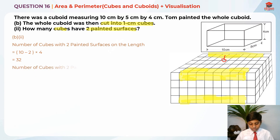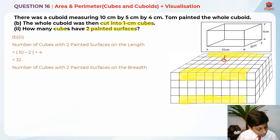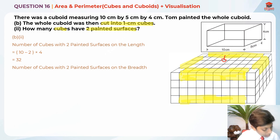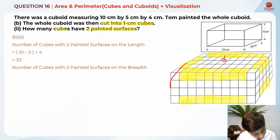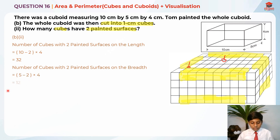For the breadth edges: the breadth is 5 cm. There are four edges along the breadth — here, here, here, here, and the side we cannot see. Excluding corner pieces: 5 − 2 = 3 cubes per edge, times 4 edges gives 3 × 4 = 12 cubes.